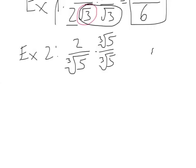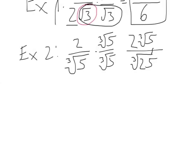But look what happens if you multiply by that — again, don't write this, it's not correct. I'm going to end up with 2 cube root of 5 in the numerator, and on the bottom I can multiply those together to get the cube root of 5 squared, or the cube root of 25. So nothing happened — no radicals went away from the denominator, so that's actually not what we're going to multiply by.